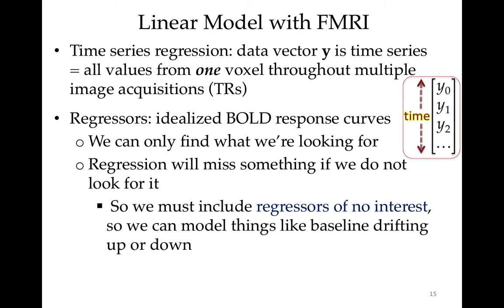In functional MRI, the data vector is the time series - all the values from one location in the brain, one voxel through multiple image acquisitions, which are jargonly called TRs. So the time axis runs down the vector. And regressors are then idealized fMRI BOLD response curves. We can only find what we're looking for. The regression boils all the data down into a bunch of betas. We take 400 time points and we might end up with, if you have three tasks, three betas. So 400 time points and now it's turned into three betas. If the regression model wasn't a good model, the betas probably aren't going to tell you very much. But we need to include the regressors of no interest in order to filter out the stuff that we don't want in the data in order to be more sensitive to detect the stuff we do want.